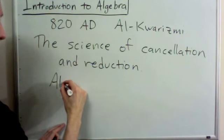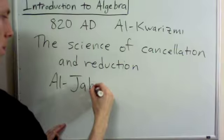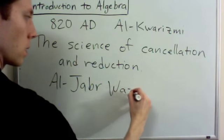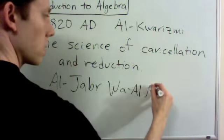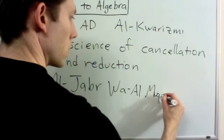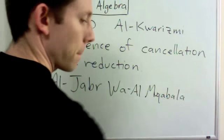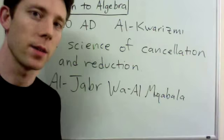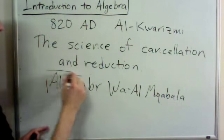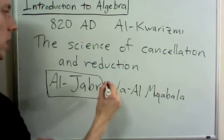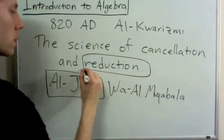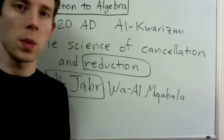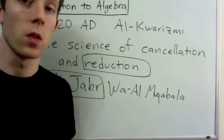And it was called Al Jabber Wa'al Mukabla. I might not be pronouncing that right. But the interesting part is that the word Al Jabber, meaning reduction, was basically a short name for the title of the book.